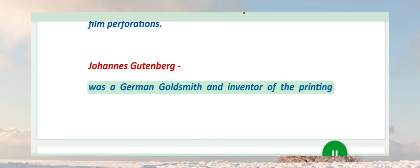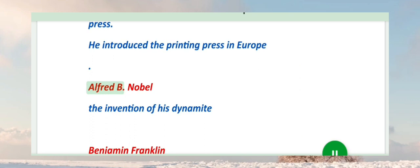Johannes Gutenberg was a German goldsmith and inventor of the printing press. He introduced the printing press in Europe.